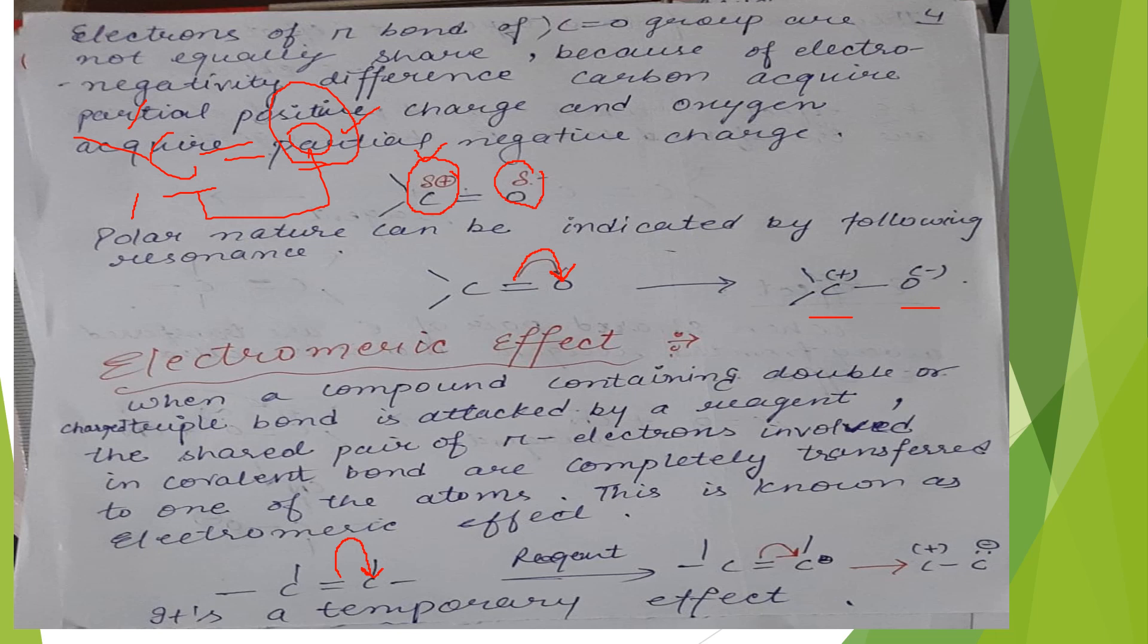The shared pair of electrons completely transfers to one of the atoms. This is known as the electromeric effect.